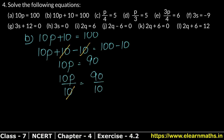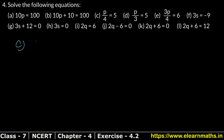The 10s cancel, giving us p on the left and 9 on the right. So p equals 9 is the answer. Let's do Part C now. Part C is: p divided by 4 equals 5. Since 4 is dividing, we multiply both sides by 4.